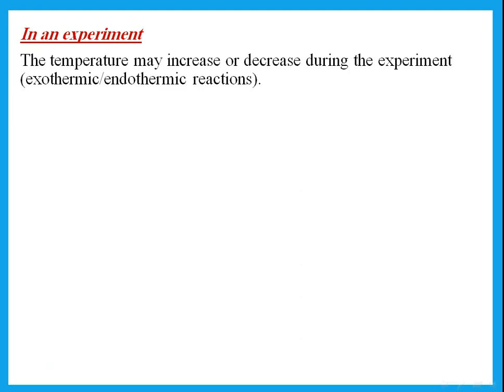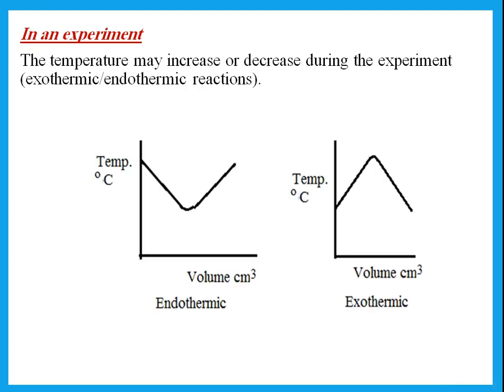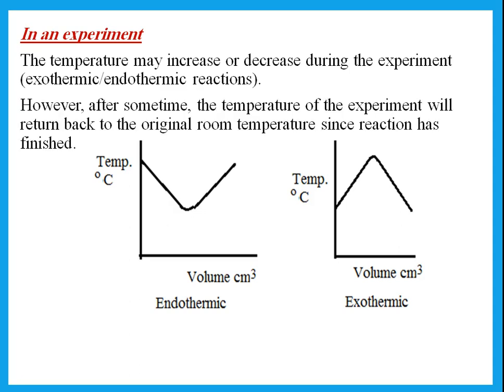In an experiment measuring temperature: at the start it will be room temperature, then it will increase or decrease depending on whether the reaction is exothermic or endothermic. If the reaction is endothermic the temperature goes down. After the reaction has finished, if I come back one hour later the temperature will have returned to room temperature, because the reaction is over. Whether the temperature went down or up during the experiment, once the reaction finishes it returns to room temperature.